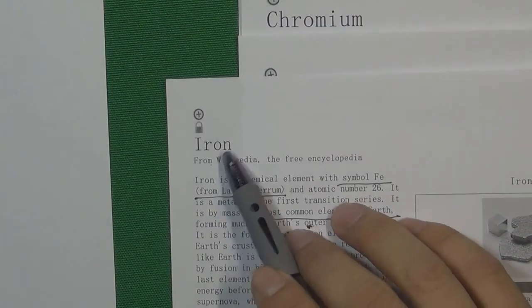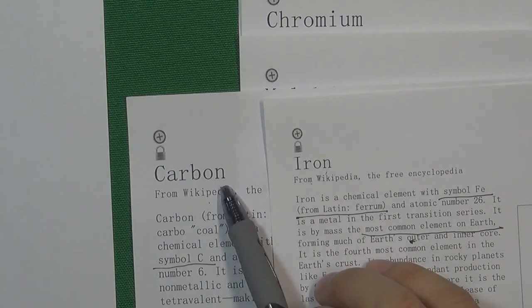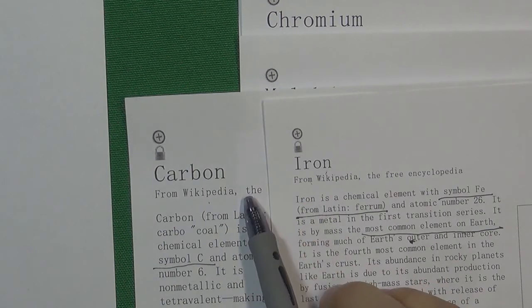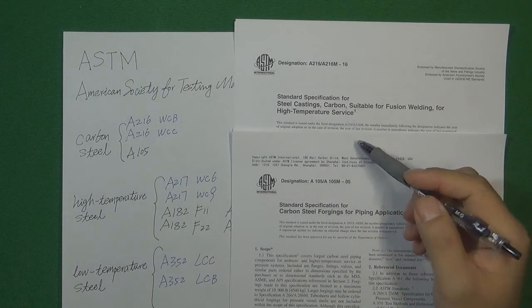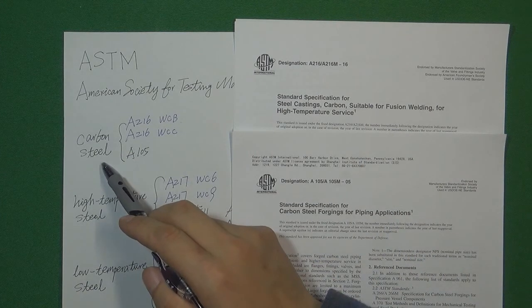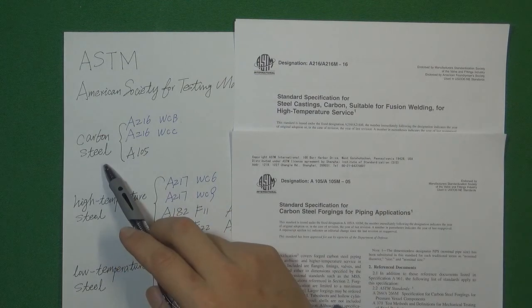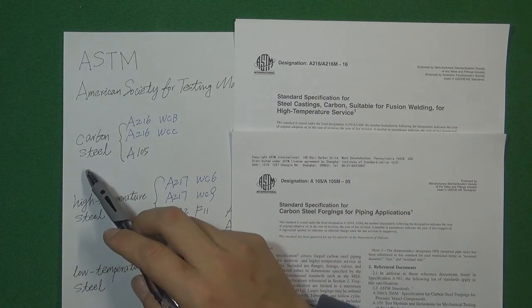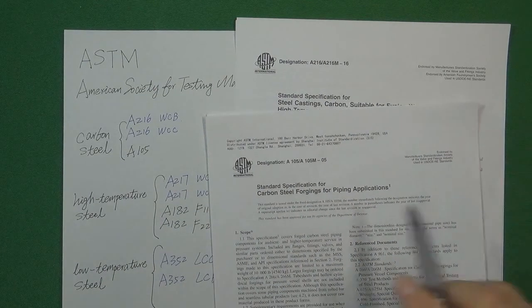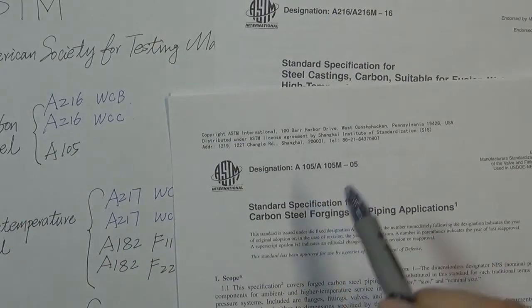Now let's talk about the first group of material: carbon steel. Carbon steel is made by mixing iron with carbon — two elements combined make carbon steel. Let's look at the standards in ASTAN. There are two standards for the carbon steel group because material engineers use the same chemical elements to make solid metal in two ways: one is called forging, and another is called casting. The first standard is A105 — the standard for forging carbon steel.